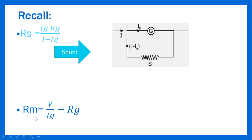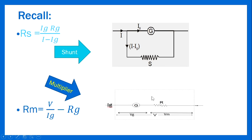We also talked about the multiplier — a resistor connected in series to a galvanometer to convert it to a voltmeter. The formula for calculating the resistance of the multiplier is: RM = V/IG − RG, where V is the maximum voltage range you want the voltmeter to measure, IG is the galvanometer's full-scale current, and RG is the galvanometer's resistance. These formulas will be used to solve all calculation problems under this topic.